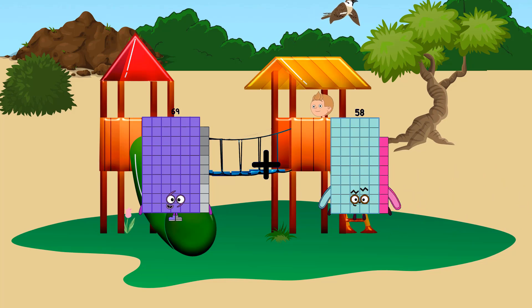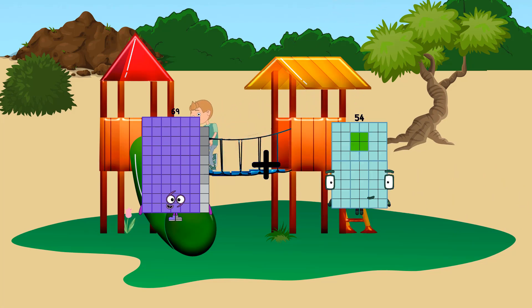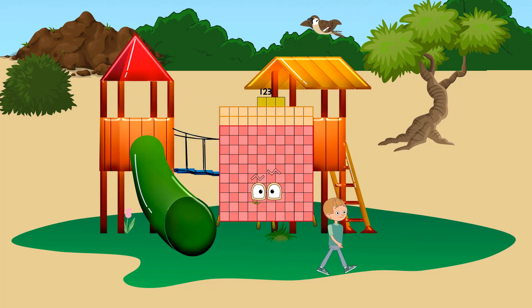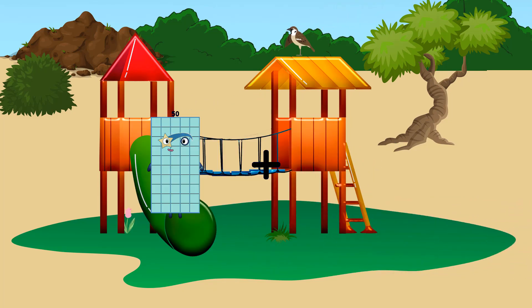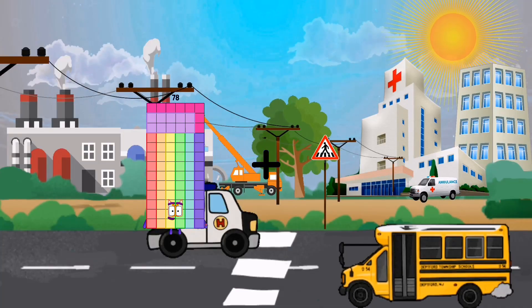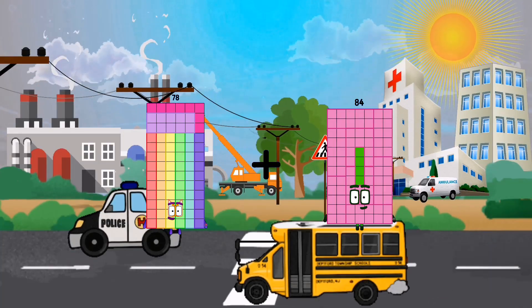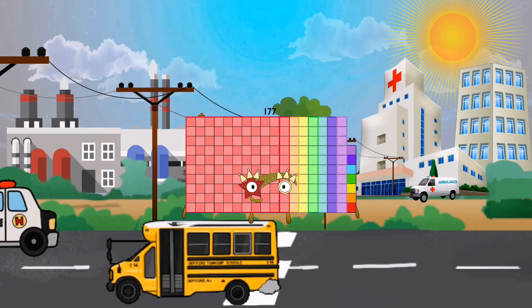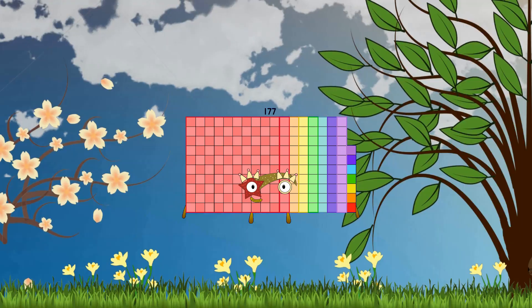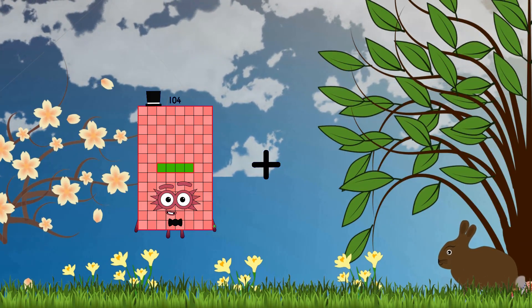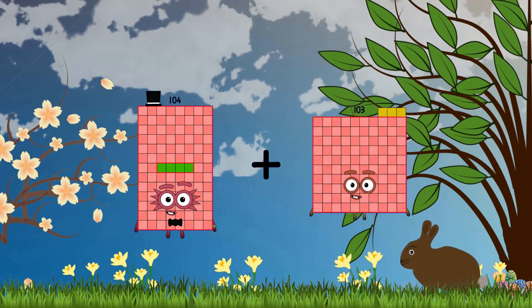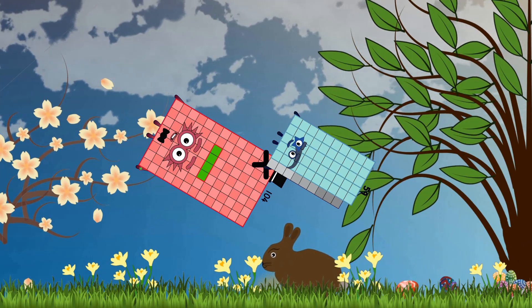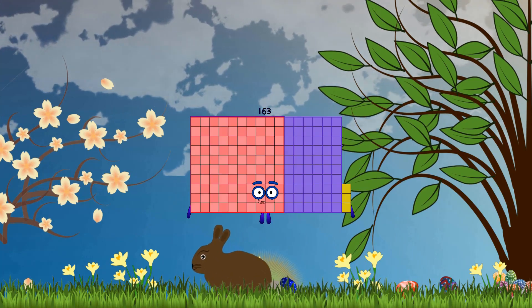69 plus 54 equals 123. 78 plus 99 equals 177. 104 plus 59 equals 163.